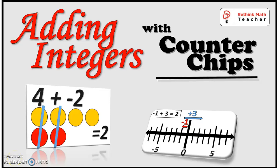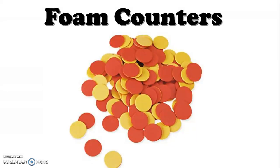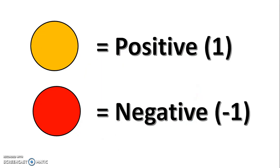Adding integers with counter chips from RethinkMathTeacher.com. Counter chips have two sides: one side is yellow and the other is red. The yellow side represents a positive value — positive one — and the red side represents a negative value — negative one — for each counter chip.